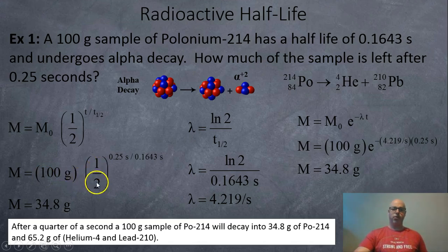And we'll use the one half formula, so one half times 0.25 seconds divided by 0.1643 seconds the half-life. And so in a quarter of a second the 100 grams would decay all the way down to 34.8 grams of polonium-214.